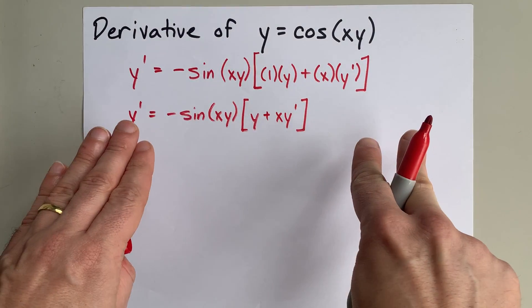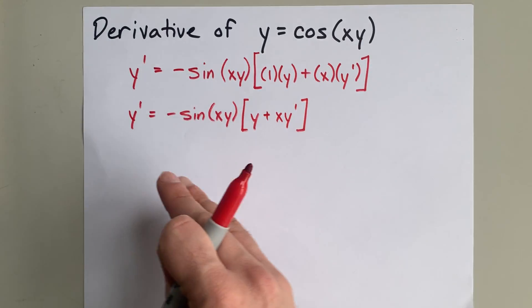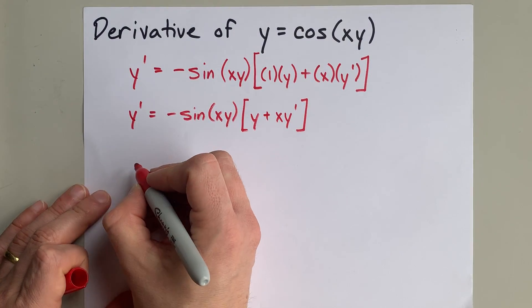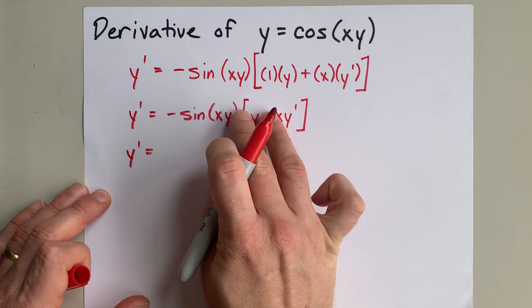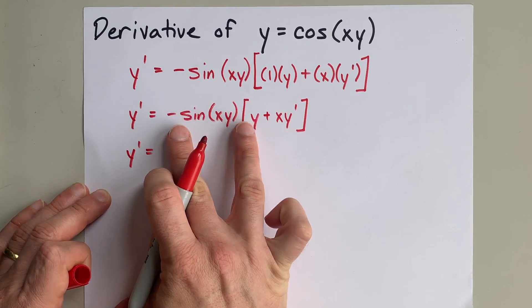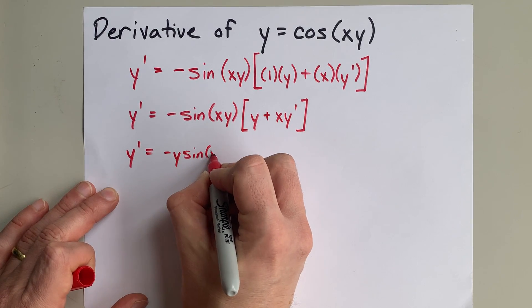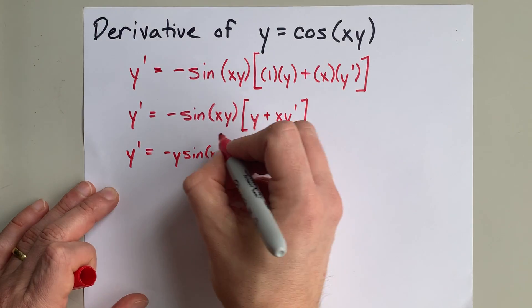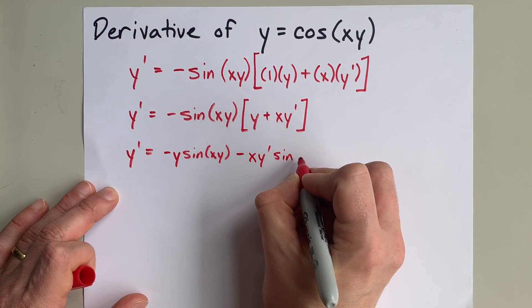Then I'll have two terms, one of which has y prime in it, and I'll be able to move that to the other side of the equation. When I multiply negative sine xy times both of these things, this first thing becomes negative y sine xy, and the second thing becomes minus x y prime sine xy.